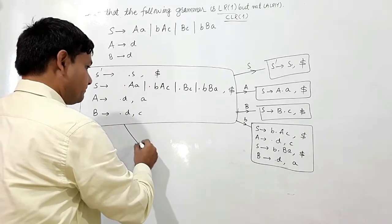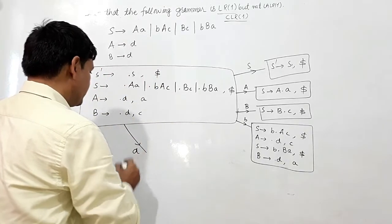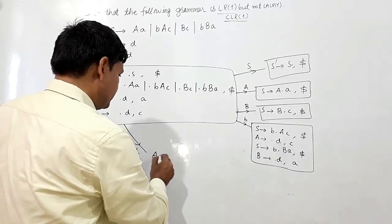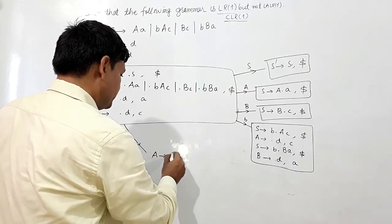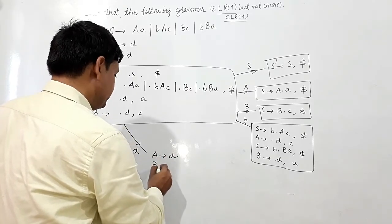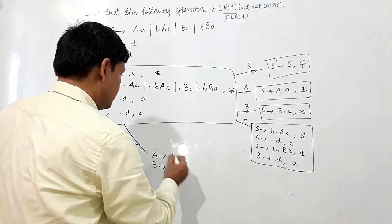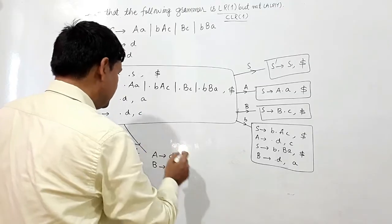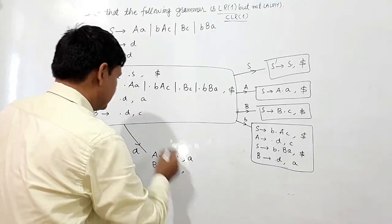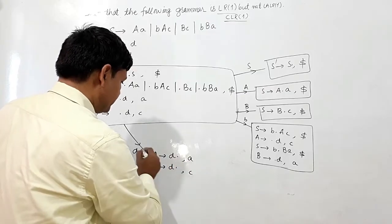If I read small D, A will give me D dot, and B will give me D dot, both with lookahead dollar.